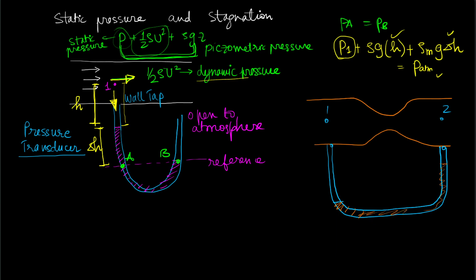The size of the manometric tube is kept sufficiently large in order to eliminate any capillary effects. The presence of capillary effects would give rise to spurious changes in height even though there is no actual change in pressure — the change in height would be due to capillarity, not changes in pressure.